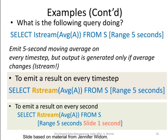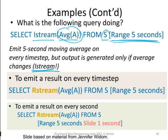Consider the following query: an iStream over a query that computes the average of attribute A from a relation S with a range of 5 seconds. We take a 5-second sliding window, compute the average, and output the average only when it is changing — that is what iStream does. If you want to emit the result at every time step, you have to use rStream instead. If you want to emit results every second, you specify the window as 5 seconds large but sliding every second. So this is basically just SQL with a bit of flavor coming from the data stream part.